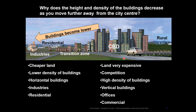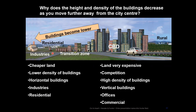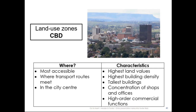Why is the CBD so expensive? Because everybody wants to be there — everybody's competing for it. So we're not going horizontal, but vertical. What is my transition zone? The transition zone is that area in between — we don't know whether it is a CBD or a residential area. The industries are put on the outside mainly because of pollution.